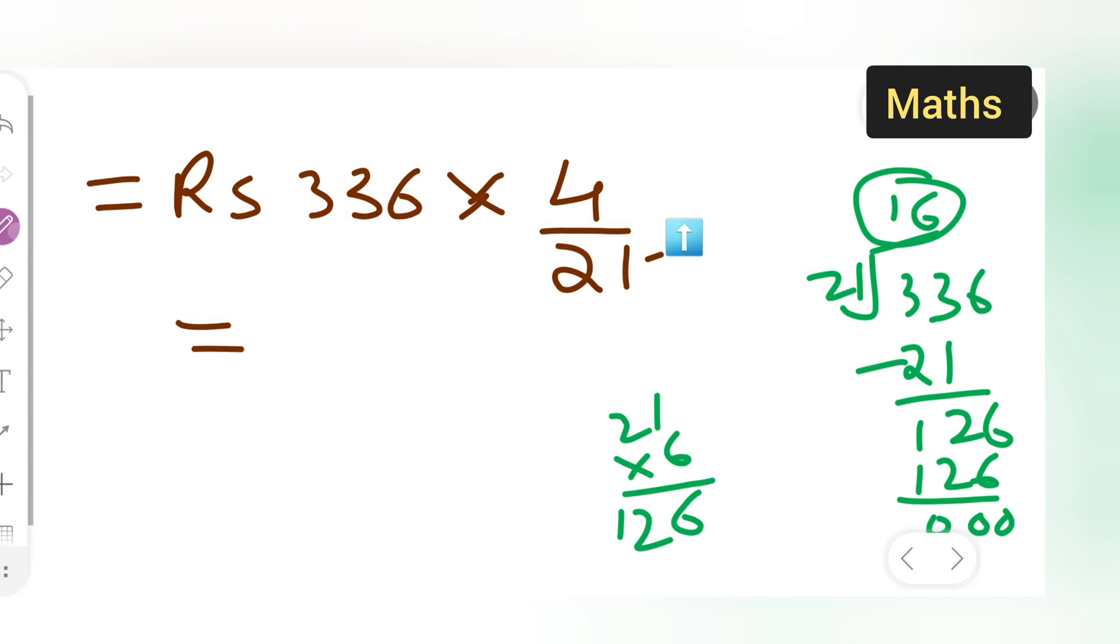Basically, 21 ones are 21, and then 126. Your answer will be 336. Then you have to multiply this.